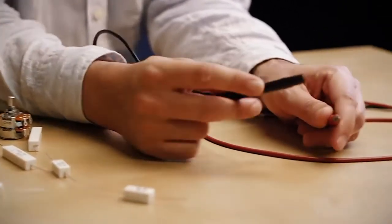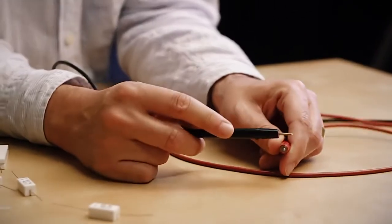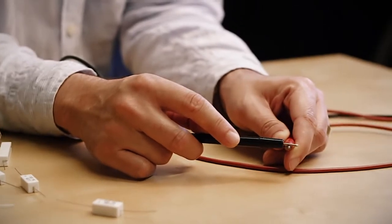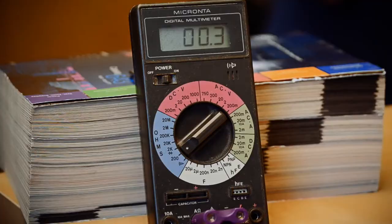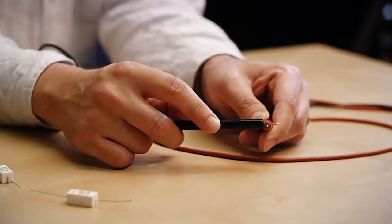If you ever need to measure a small resistance, it's always important to know the resistance of your probes themselves. Touch the probes together and see what your meter reads. In this instance, it reads about 0.3 ohms, which is the resistance of the wire of the probes themselves.